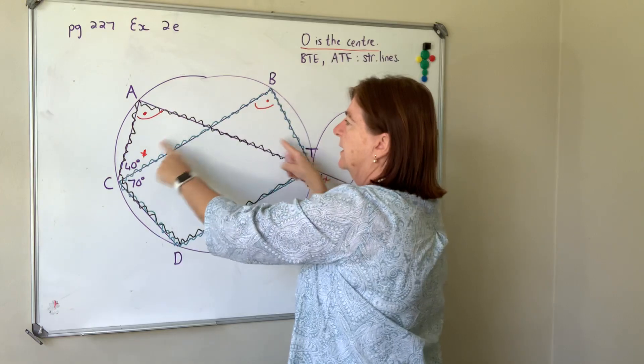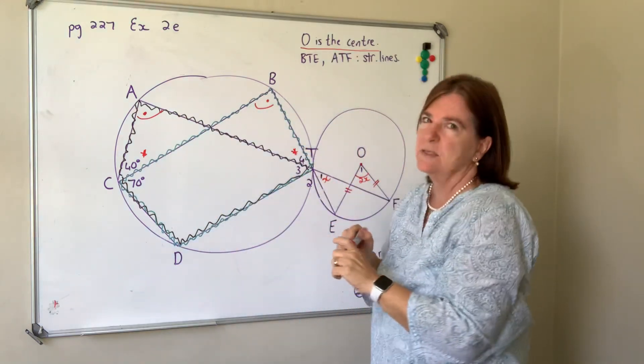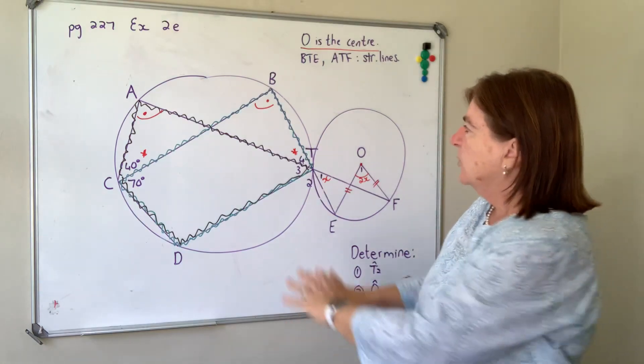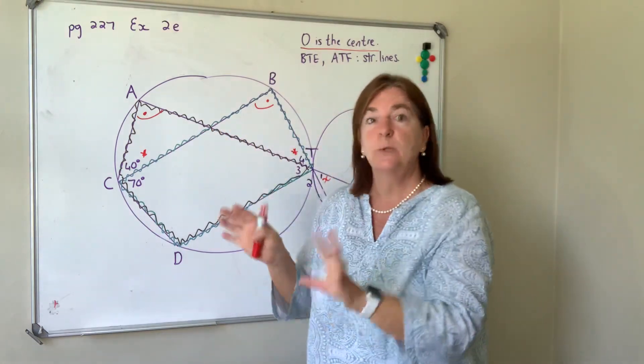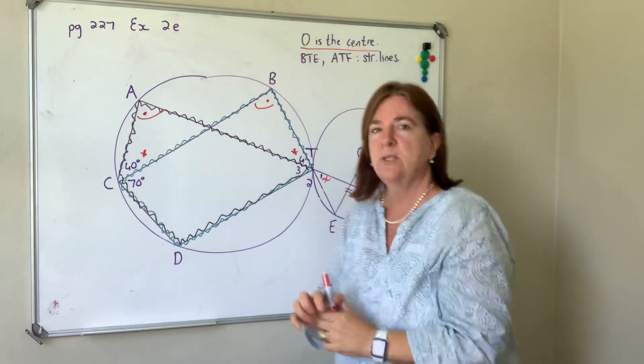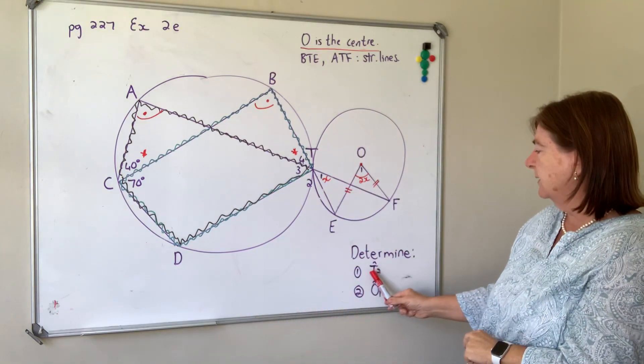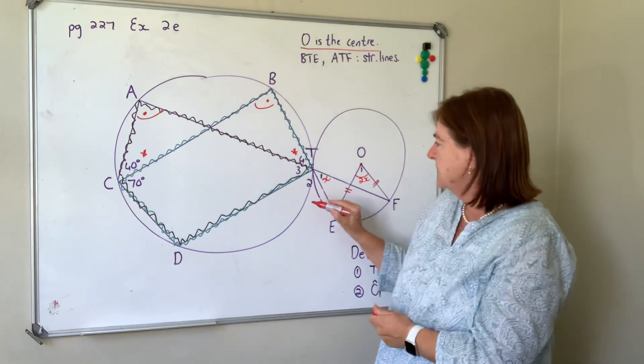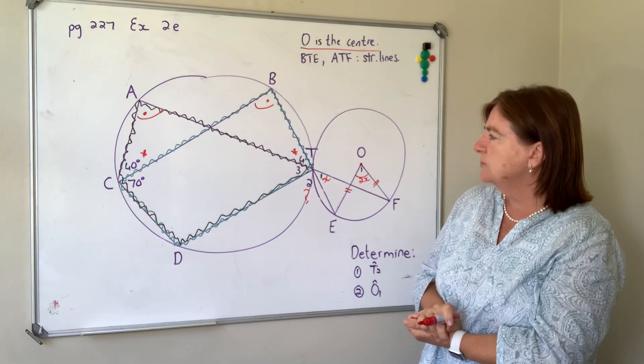Well there is but not from circle geometry. So now that we've got a better understanding of the sketch we can go and look at the questions. The first question is determine angle t2. So now we think, okay where is t2? Here is t2, but now hang on, that's part of a cyclic quad.